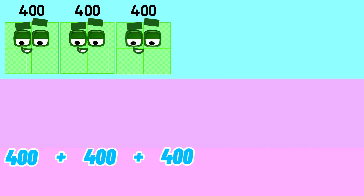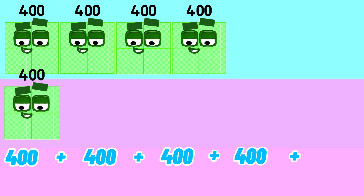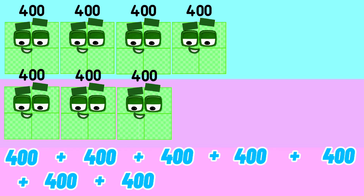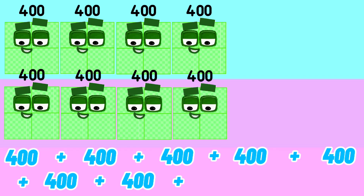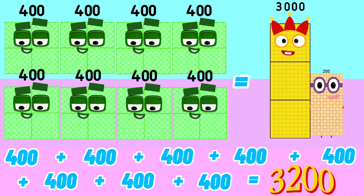Lastly, 400 plus 400 plus 400 plus 400 plus 400 plus 400 plus 400 plus 400 is equals to 3,200.